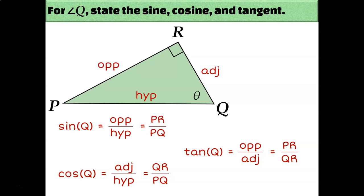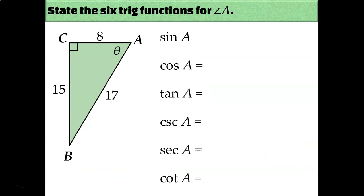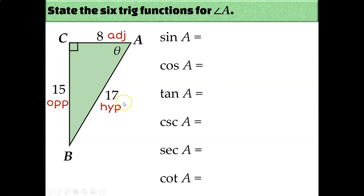Typically problems will have numbers provided. Let's try an example where we write the side lengths instead of names. Identify opposite, adjacent, and hypotenuse first: the hypotenuse is 17 — it's across from the right angle and the longest side. The adjacent side is 8, and 15 is the opposite. Sine of angle A is opposite over hypotenuse: 15 over 17. Cosine is adjacent over hypotenuse: 8 over 17. Tangent is opposite over adjacent: 15 over 8.